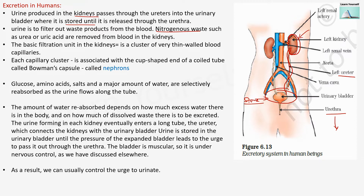As we have seen in the respiratory tract that alveoli are responsible for gaseous exchange, here the nephrons are responsible for filtration of the blood. The basic filtration unit in the kidney is a cluster of very thin-walled blood capillaries. Each capillary cluster — a collection of capillaries — comes together and is associated with a cup-shaped coiled tube called Bowman's capsule. This is collectively known as a nephron, and these units are responsible for filtration of blood.